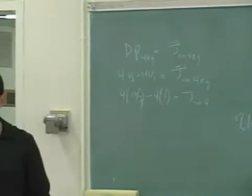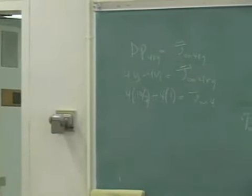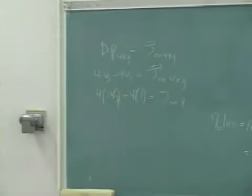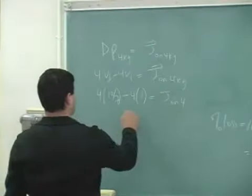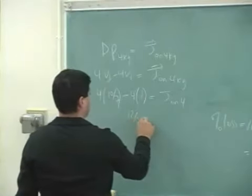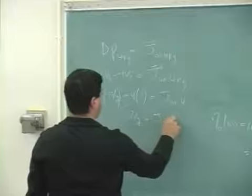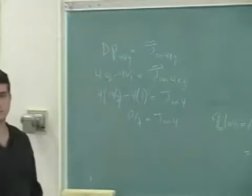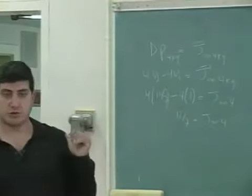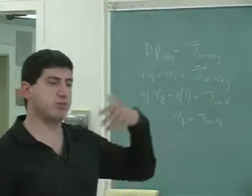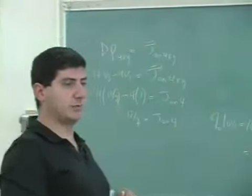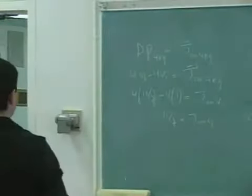And now we're left with 40 minus 28 is 12 sevenths. So the 3 kilogram object imparts impulse on the 4 kilogram object equal to 12 sevenths newton-seconds.